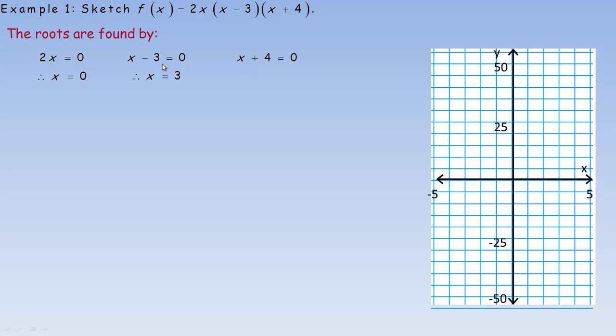x equals 3 would be another. If it happened to be an x plus, when we take the 4 over the sign changes, or we could subtract 4 from both sides, and we get x equals negative 4. So the x-intercepts are at negative 4, 3, and 0. Because all these are the power of 1, they're all a crossing, not just a touching.